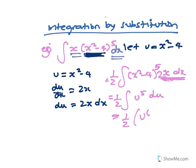So that's a half u to the 6 on 6, plus c. Don't forget Charlie. So that's 1 on 12, and the u is equal to x squared minus 4, and that's to the power of 6. I've taken the 6 out already.